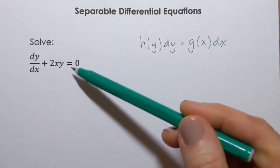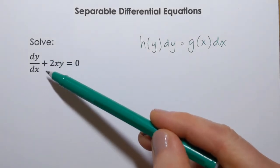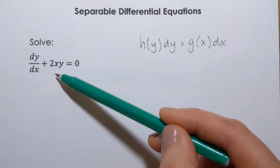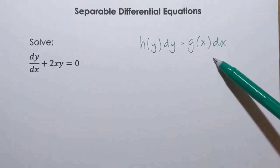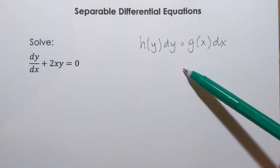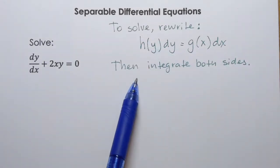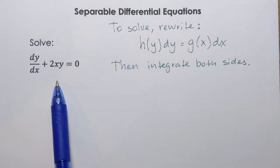So, as we look at our example dy/dx + 2xy = 0, we're going to rewrite this equation in this form, and then we're going to integrate both sides. I'm going to make a note of this approach. Okay, so now let's try to apply the steps to this equation.